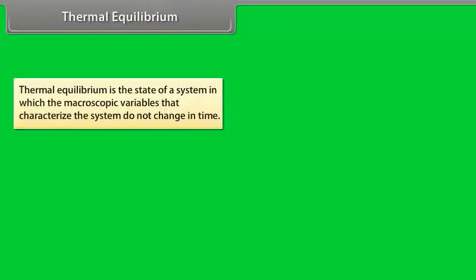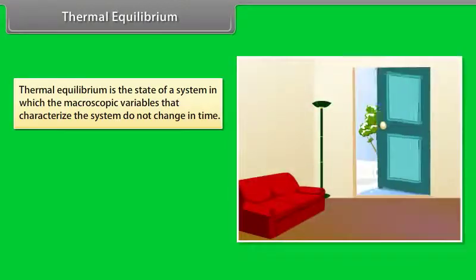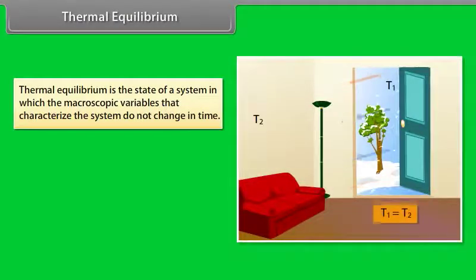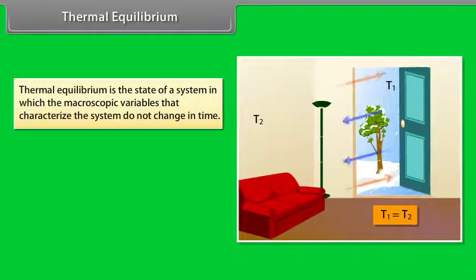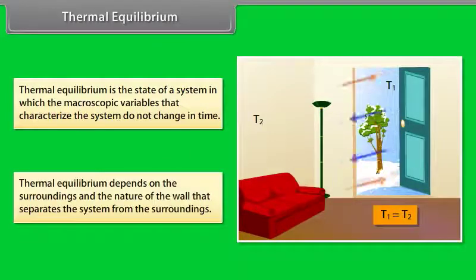Thermal equilibrium is the state of a system in which the macroscopic variables that characterize the system do not change in time. For example, in winter, when you open the door of your house, heat moves out. To balance the temperature, after a few minutes you feel that the temperature inside and outside the house is the same. This is due to thermal equilibrium. Thermal equilibrium depends on the surroundings and the nature of the wall separating the system from the surroundings.